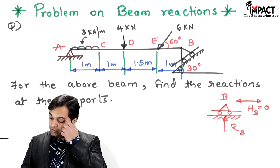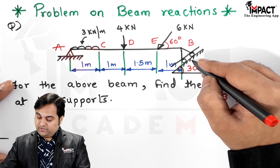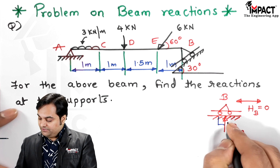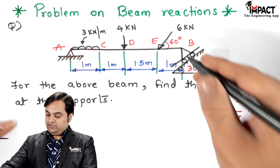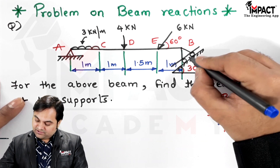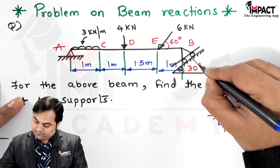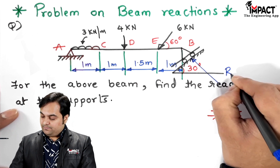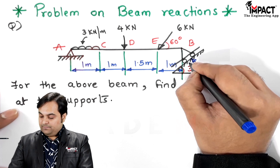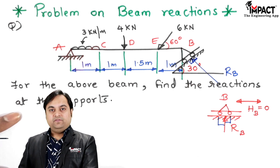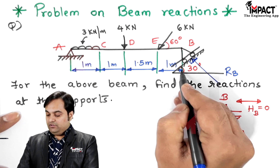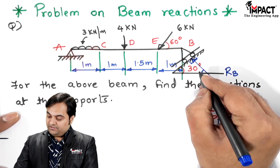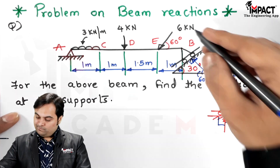The reaction is always perpendicular to the surface. Here RB is perpendicular to the horizontal surface, and similarly the reaction at the inclined roller is perpendicular to the inclined surface. The angle of the inclined plane is 30 degrees, so the reaction makes an angle of 90 minus 30 equals 60 degrees with the horizontal.